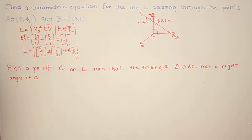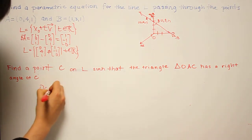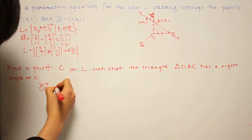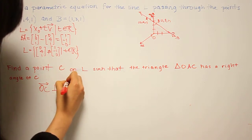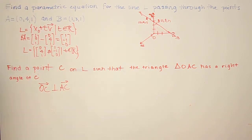So if the triangle OAC has a right angle at C, then we know the vectors OC and AC are perpendicular. So this means that their dot product is 0.